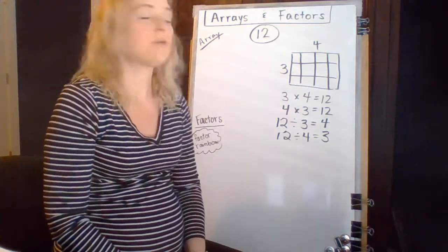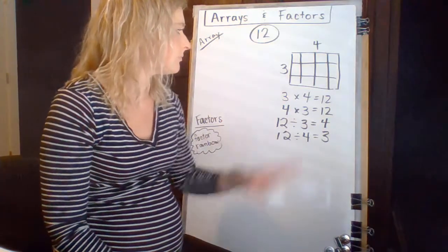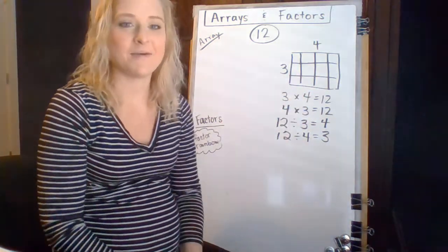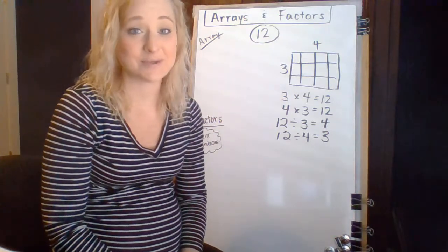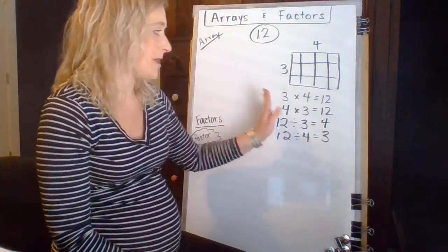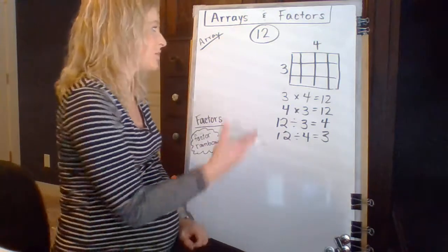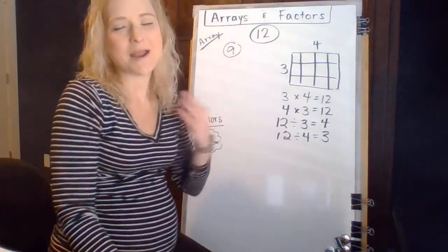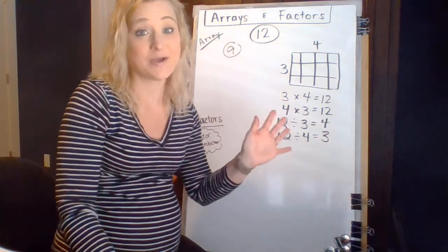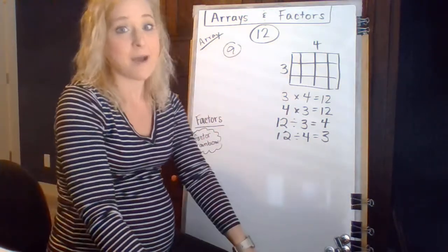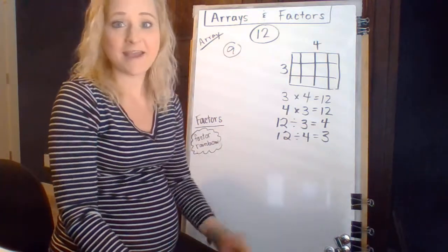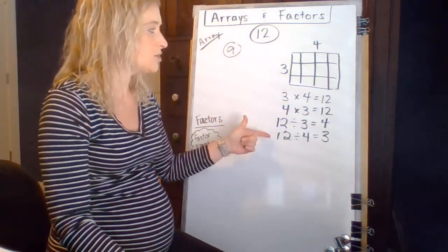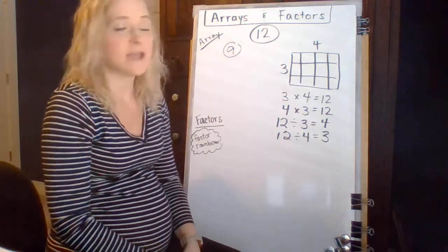Every array, every rectangular array has 4 equations. There is a special kind. Most of them have 4 equations. There are some that are very special called square arrays, and they don't have as many equations that go with their array. Let me just show you with the number 9 real quick. I always get off on tangents in class, too. I always think about what I'm saying. Is it always true? Well, no, it's not always true. So let me show you an example where it's not true, so that you really understand. In most cases, you will have 4 different equations that go with your array, except for square numbers.